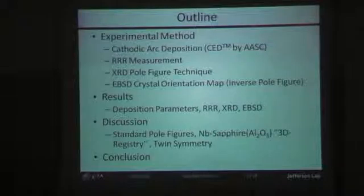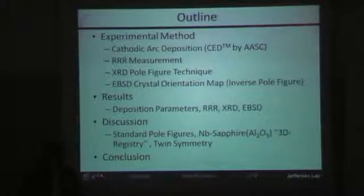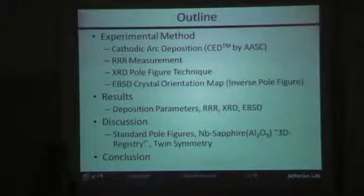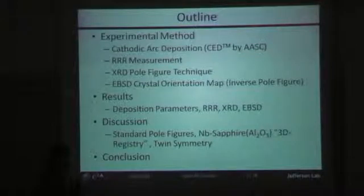The outline for tonight's talk: first we'll cover the experimental method — how the samples were produced, how they were characterized via RRR and XRD, and then EBSD. For results, we'll go over the deposition parameters, RRR, XRD, and EBSD. We're mainly looking at the structure of the films and trying to correlate it to the residual resistivity as determined by DC measurements, and the discussion of the pole figures. We'll be looking at what's termed here a 3D registry and questioning if this is a form of twin symmetry.